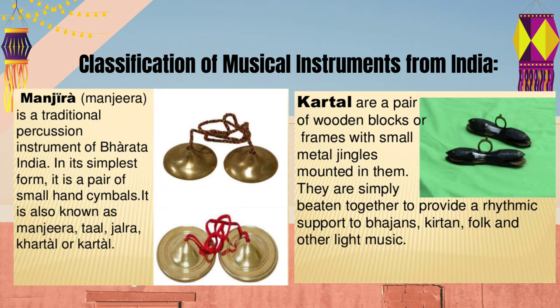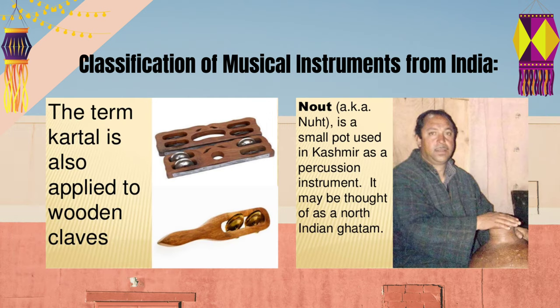Kartal are a pair of wooden blocks or frames with small metal jingles mounted in them. They are simply beaten together to provide rhythmic support to Bajans, Kirtan, folk and other light music. The term Kartal is also applied to wooden claves. Naut, also called nut, is a small pot used in Kashmir as a percussion instrument. It may be thought of as a North Indian Ghatam.